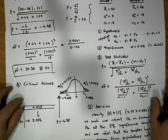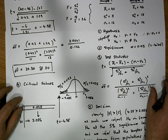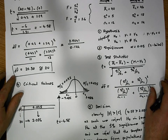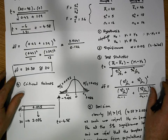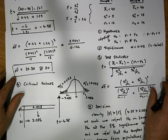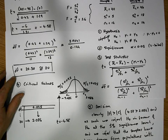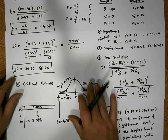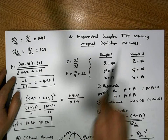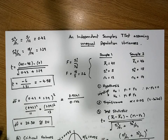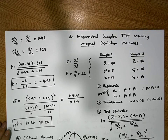This was Jonathan Lambert with the Mathematics Development and Support Service at the National College of Ireland. I hope this short video on how to undertake an independent samples t-test assuming unequal population variances was helpful. Thank you, bye bye.